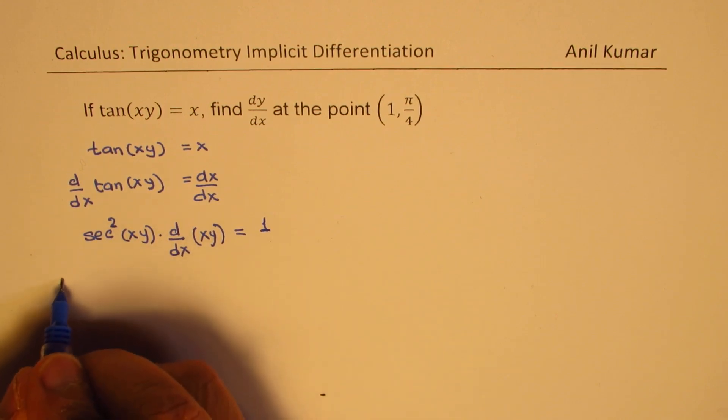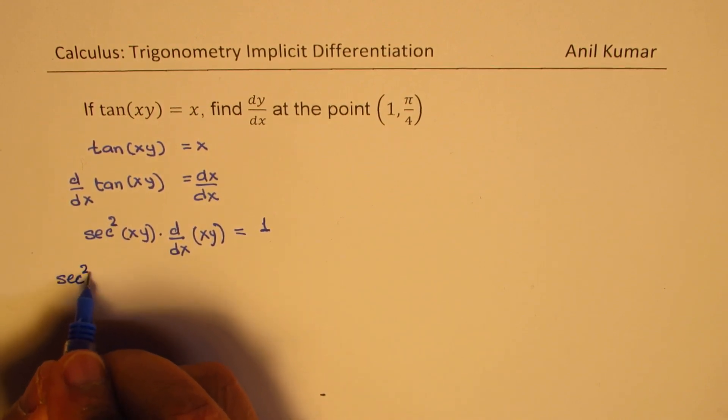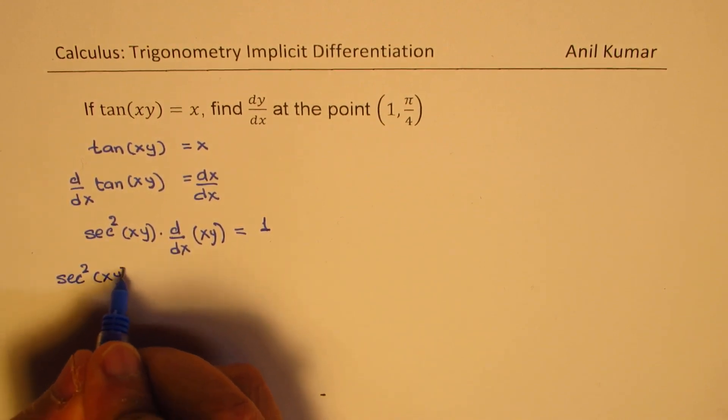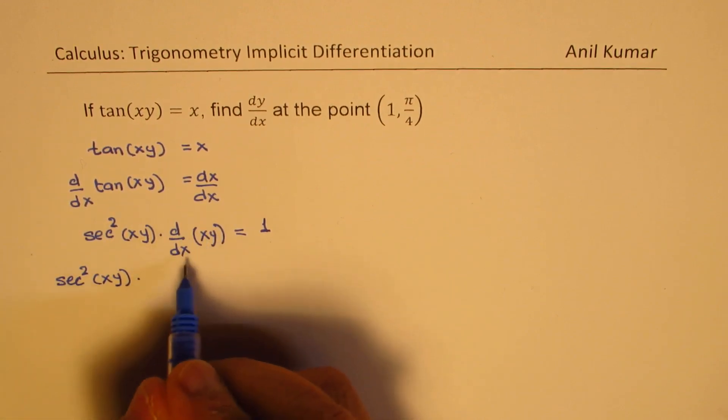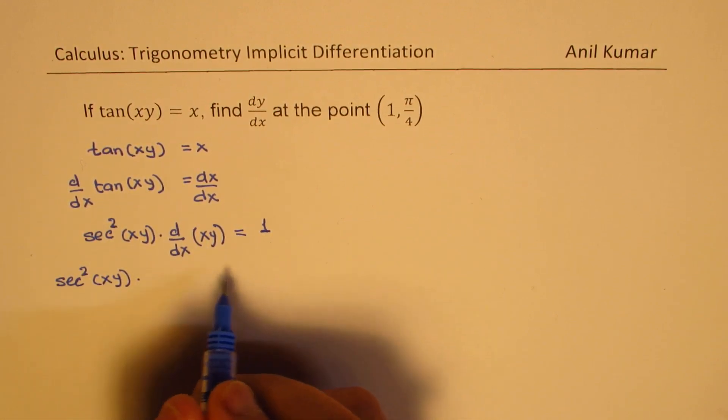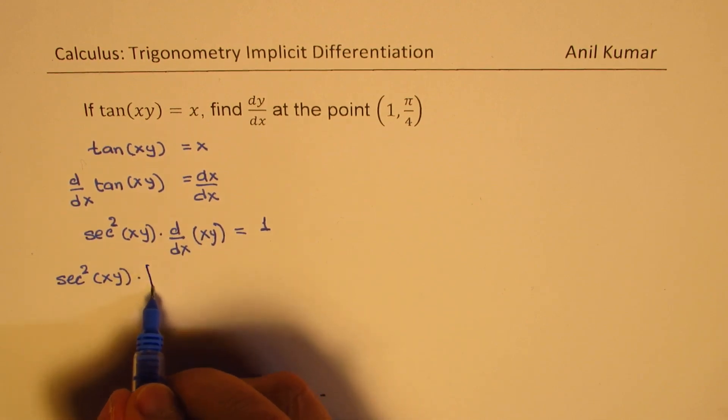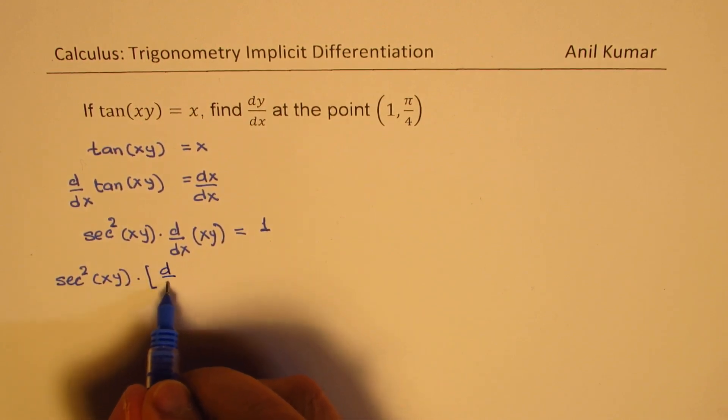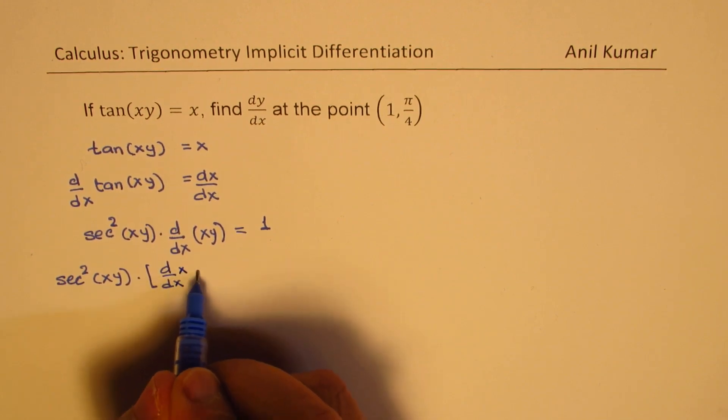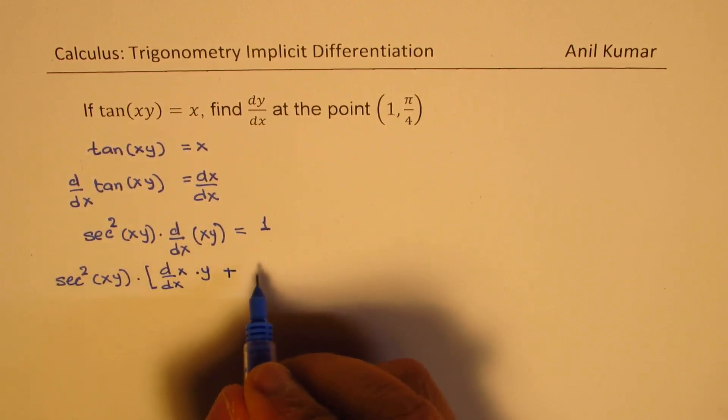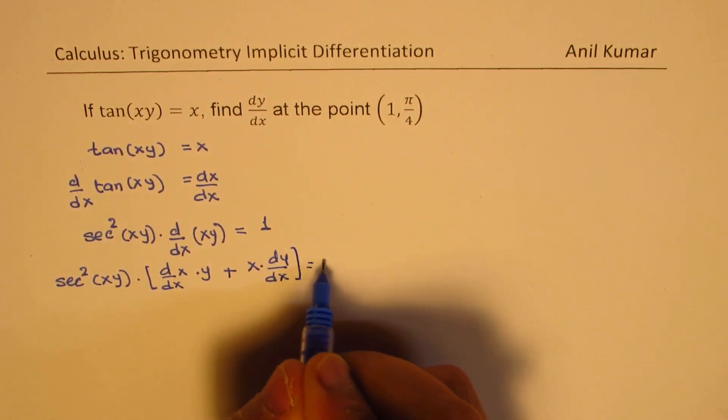So, we get sec²(xy), and that derivative we could take to the right side also. Applying the product rule, we get d/dx of x times y plus x times dy/dx, which equals 1.